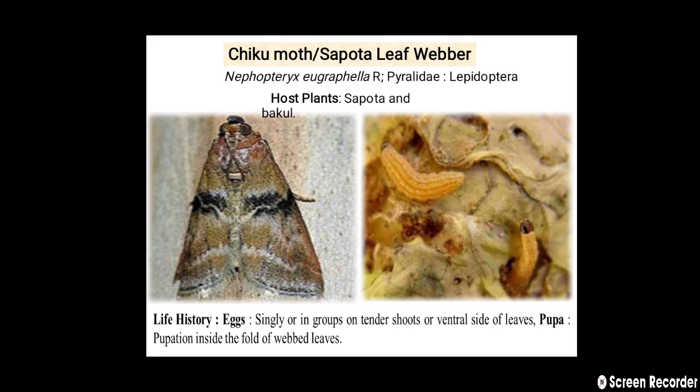The first major pest of Sapota is the Chiku moth, also called as Sapota leaf webber. The scientific name of this pest is Nephoptila eugraphella. It belongs to the family Pyralidae, order Lepidoptera. The host plants are Sapota as well as Bakur.